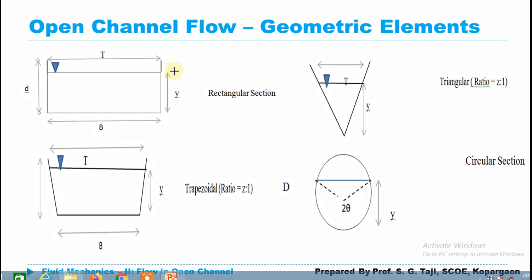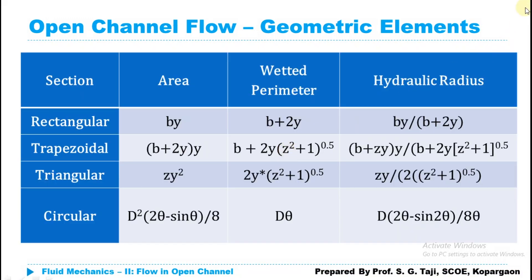Looking at the channel sections shown: for a rectangular section, y is the depth of flow, B is the bottom width, and the top width T equals B. The depth of channel is also shown. For a trapezoidal channel, the depth of channel, depth of flow y, bottom width, and top width are all labeled — in this case top width and bottom width are different. For a circular closed channel section, the depth of flow is indicated. The side slope is represented as Z to 1 (horizontal to vertical), often written as N to 1 in most cases.